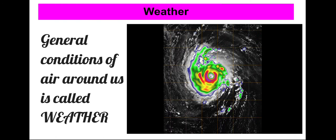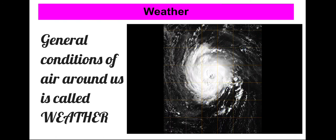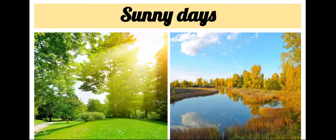We are going to see how the days are divided into types based on the weather. Sunny days — we know very well about sunny days. Most of the days are sunny days for us in India. Sunny days are usually very hot.